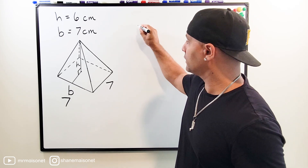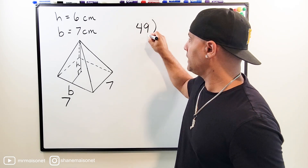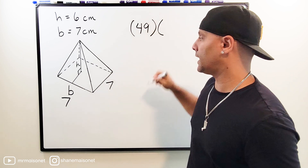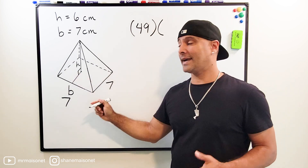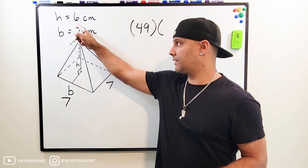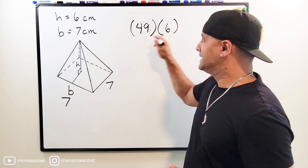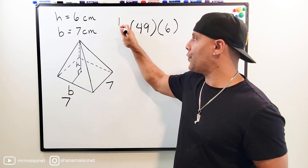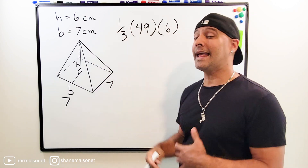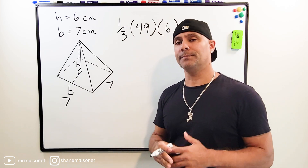So we're going to write 49 right here. Then we're going to multiply this area by the height of the pyramid, which is given — that is 6 centimeters. And if we take one third of this product, that will give us the volume of our square pyramid.